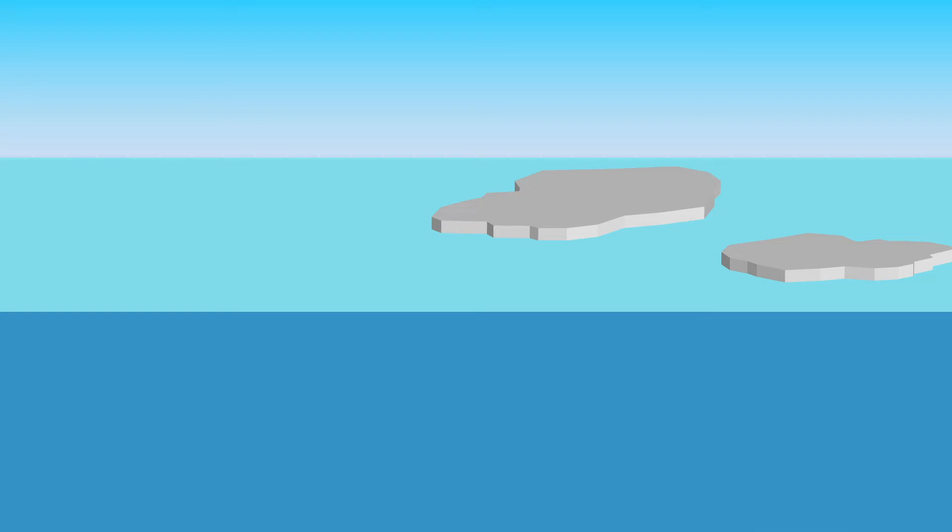In short, as sea ice melts, the melt water takes up the space of the ice that has melted. When sea ice melts, the sea level does not rise.